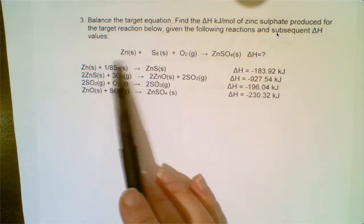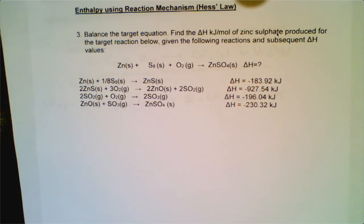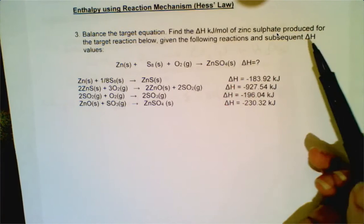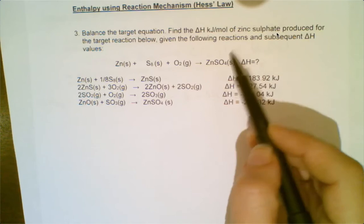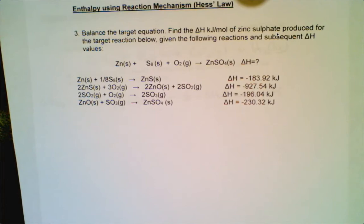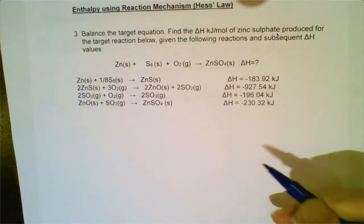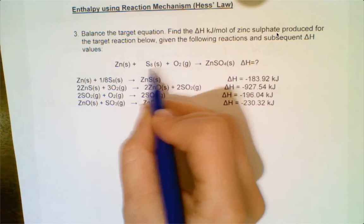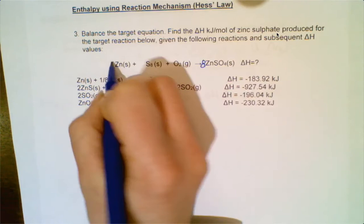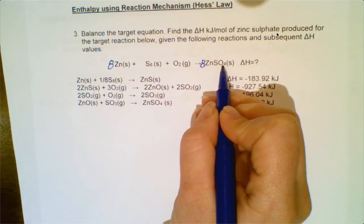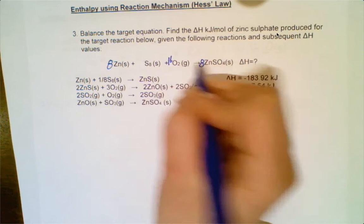The first thing you want to do is balance this equation. It's asking us to determine enthalpy per kilojoule of zinc sulfate. I'm going to balance it using whole numbers and deal with the enthalpy value at the end. I've got eight sulfur, so I put an eight in front of zinc — that means eight zinc. That changes the number of oxygens on the right to 32, so I put a 16 in front of the oxygen, and I think everything is balanced.